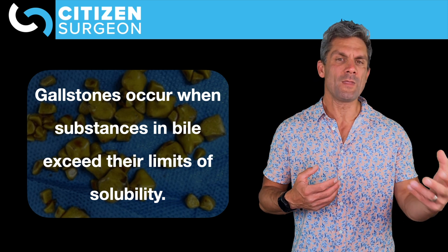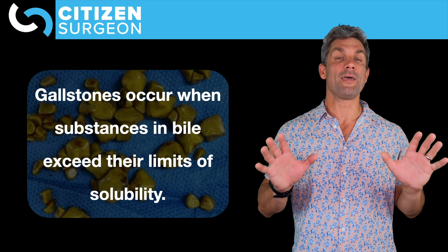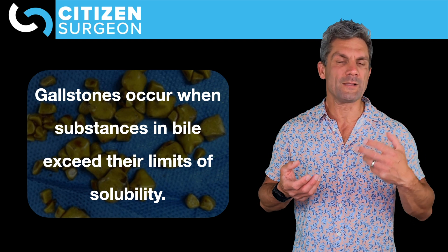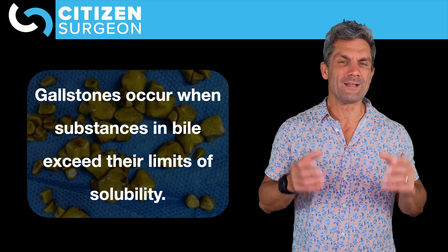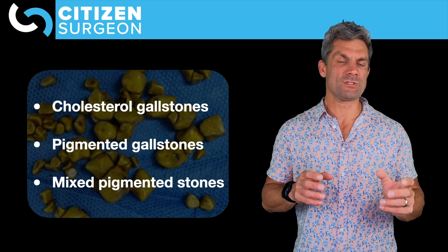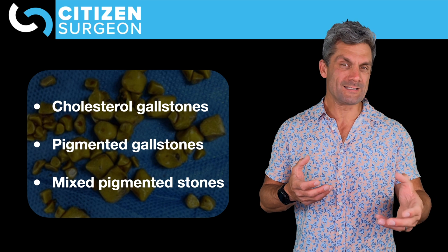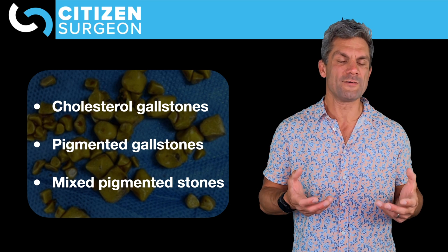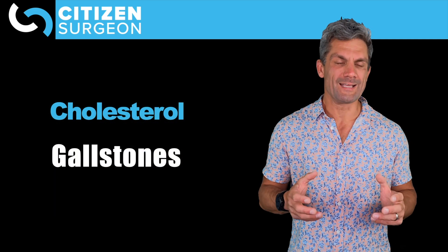Whether it's a cholesterol stone, a bilirubin stone, or a calcium bilirubinate stone, it's because that particular substance exceeded its ability to be soluble in bile. The first type of stone is the pure cholesterol stone. Second, I'll tell you about pigmented stones. And third, we'll get into mixed pigmented stones. But first, let's start with cholesterol stones and why they develop.